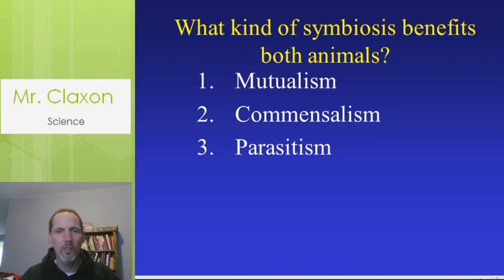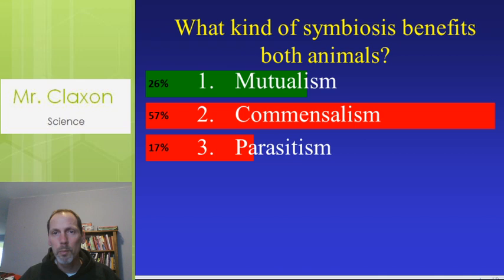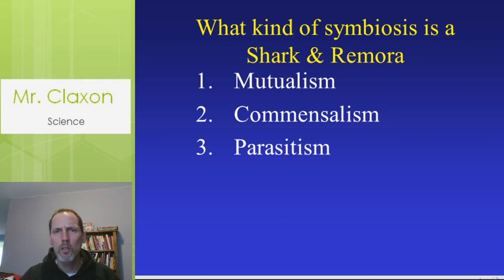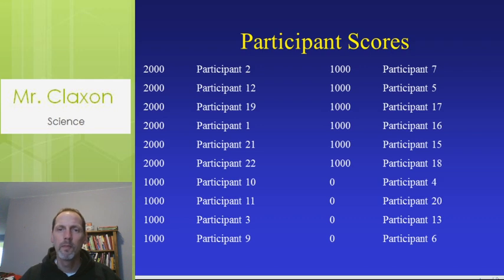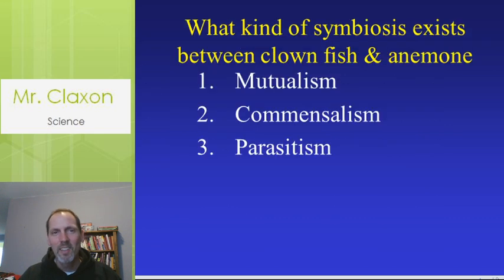Here's a review question: if it benefits both animals, what would your answer be? That would be mutualism, because it's mutual to both. And if you think back to the shark and the remora — which kind of symbiosis would that be? That would be commensalism: benefits one, doesn't hurt the other.